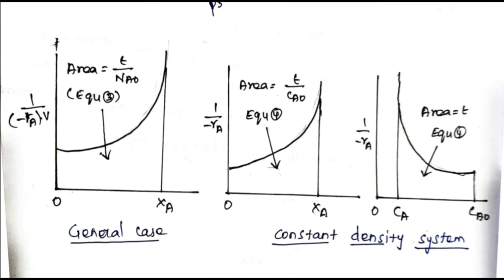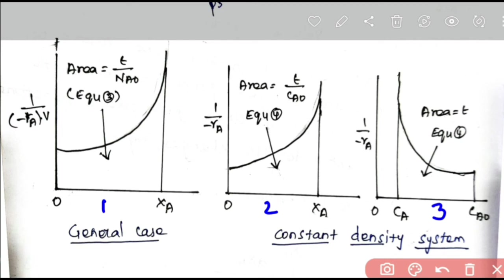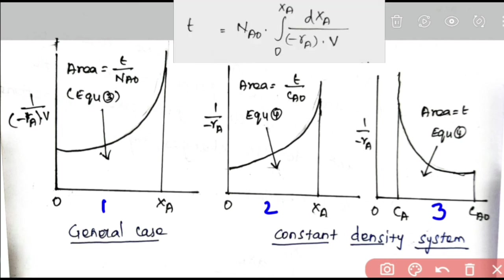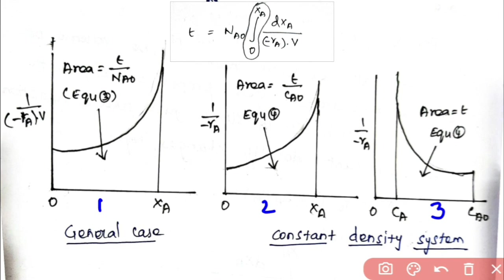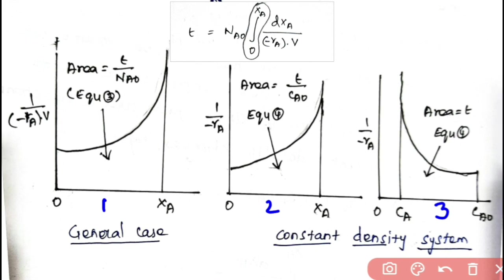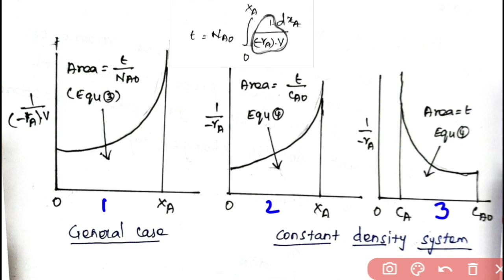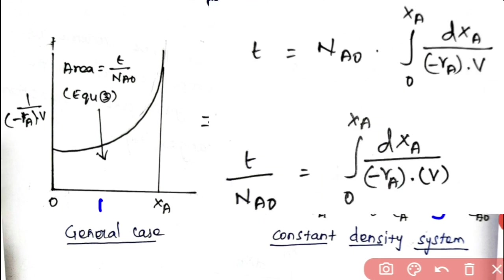Next, we look at the graphical representation of the performance equation for a batch reactor, applicable to both isothermal and non-isothermal processes. Graph 1 is for the general performance equation t = NA0 · ∫₀^XA dXA / [(−rA)·V]. The X-axis is 0 to XA (always take the integration limits as the X-axis), the Y-axis is 1/[(−rA)·V], and the area under the curve gives t/NA0.